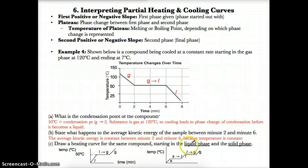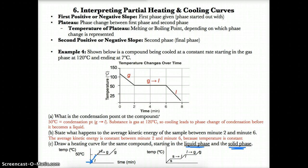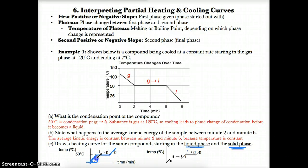Part C says: draw a heating curve for the same compound starting in the liquid phase and in the solid phase. If we start in the liquid phase, the first phase would be liquid, then evaporation as the next logical phase change from liquid to gas, and our final phase would be gas. Whenever you start in any phase, you have to go all the way to the end from where you start.